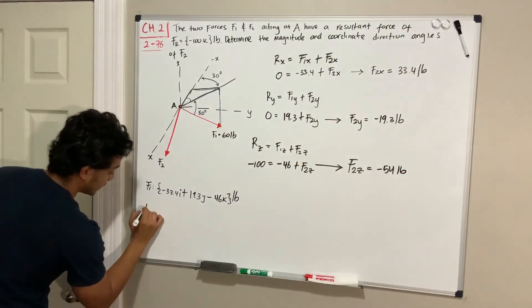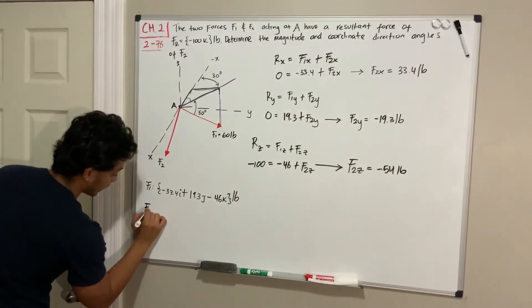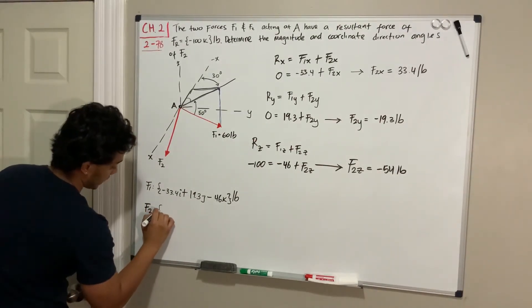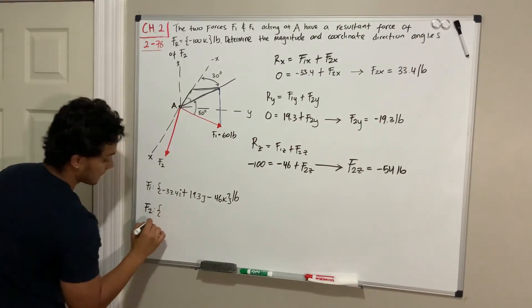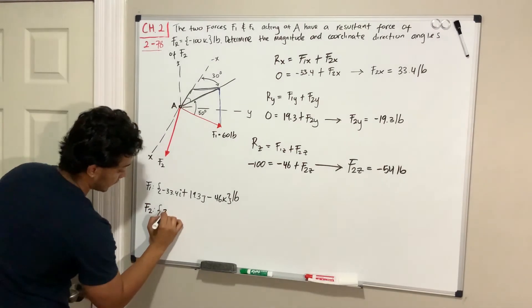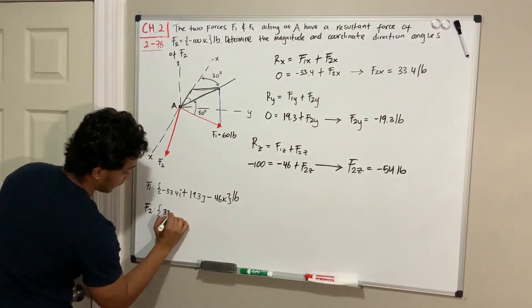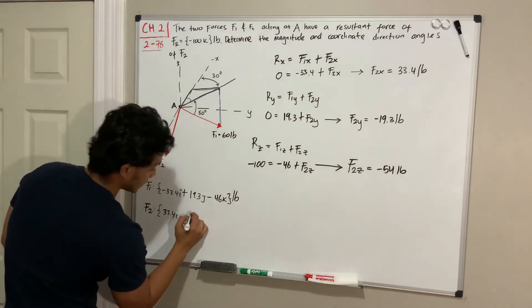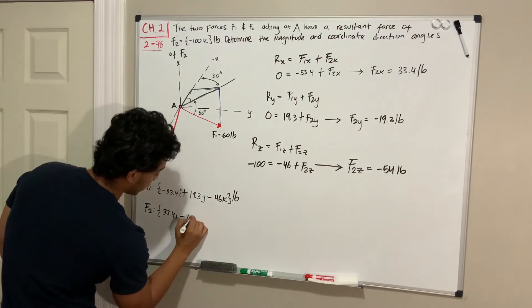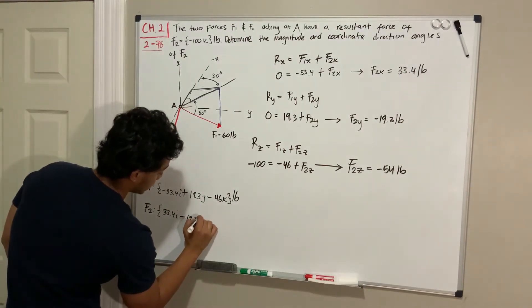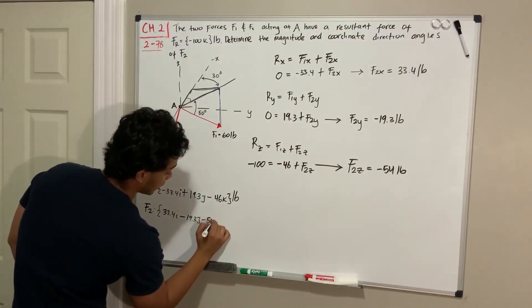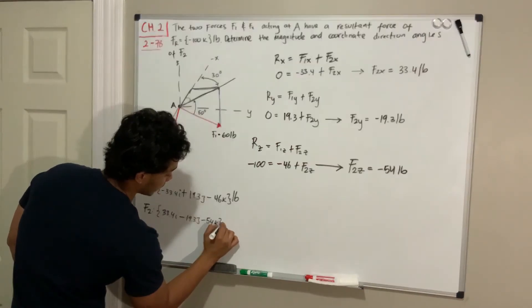Writing out F2: F2 equals positive 33.4 in the i direction, minus 19.3 in the j direction, minus 54 in the k direction — all in pounds.